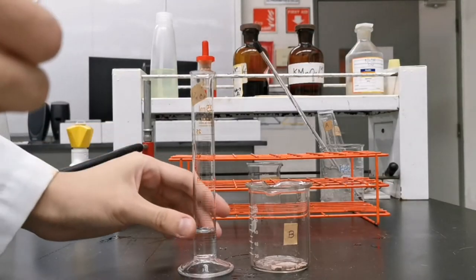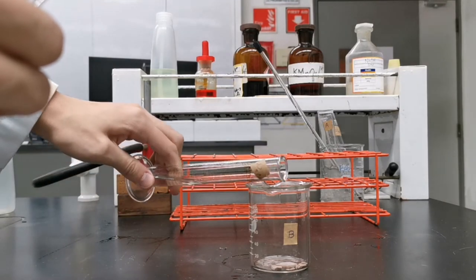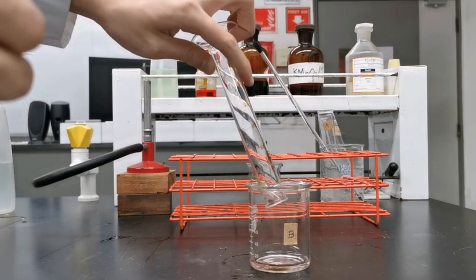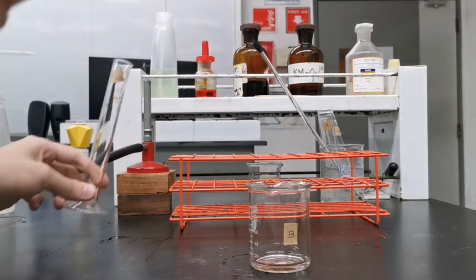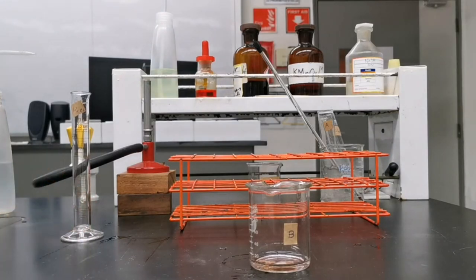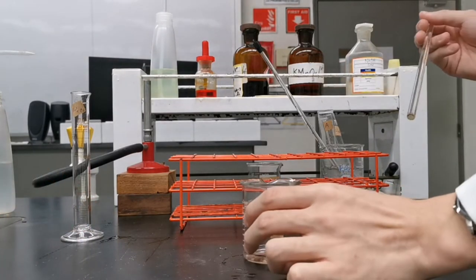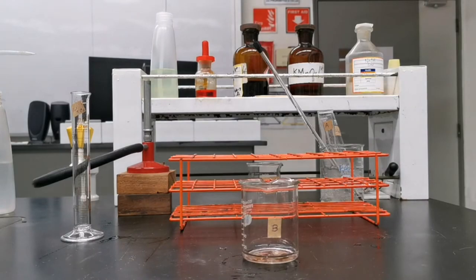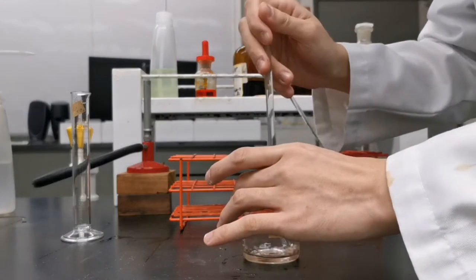Waiting for both boiling tubes to cool down, I proceed in preparing my naphthol. To do this I add 5 mls of dilute sodium hydroxide into the beaker containing the naphthol and stir to dissolve all of it.